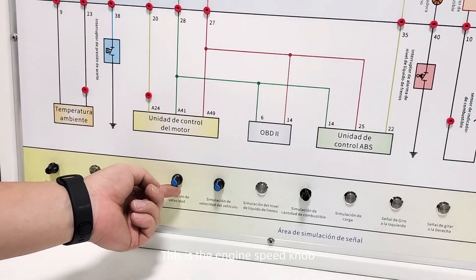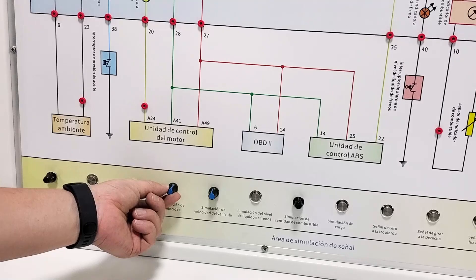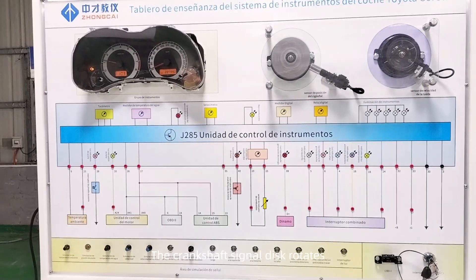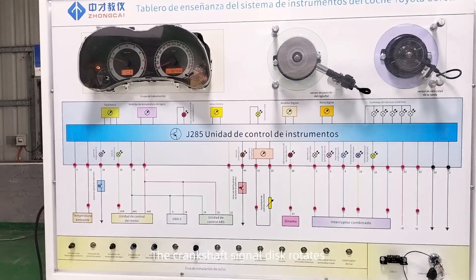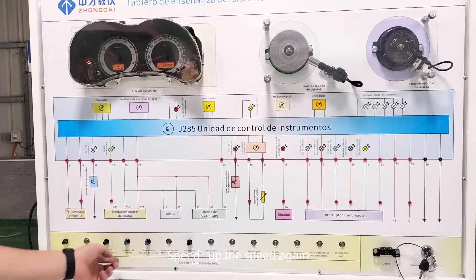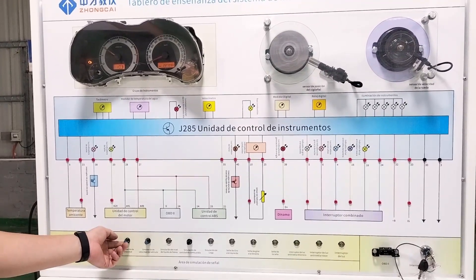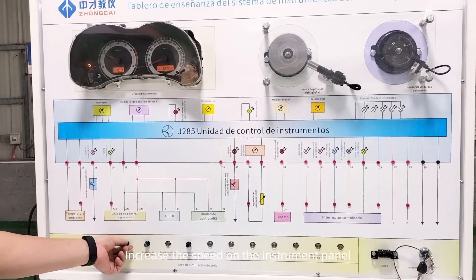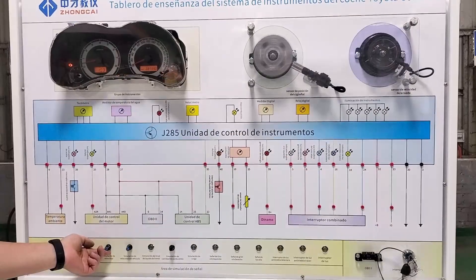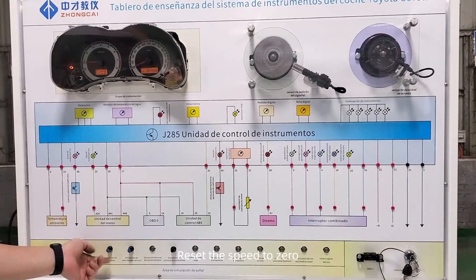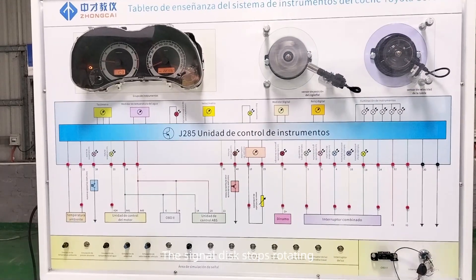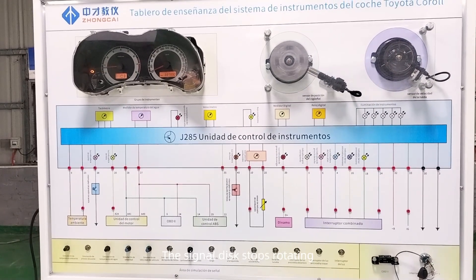This is the engine speed knob. Adjust it and the crankshaft signal disc rotates. Speed up again — the instrument panel shows the speed increasing. Reset the speed to zero and the signal disc stops rotating.